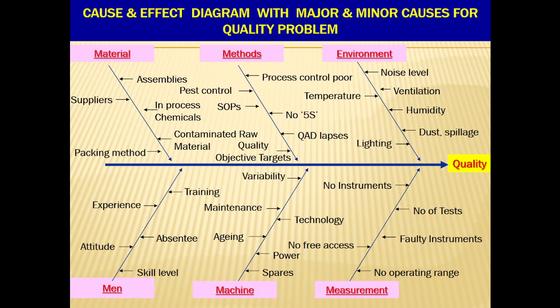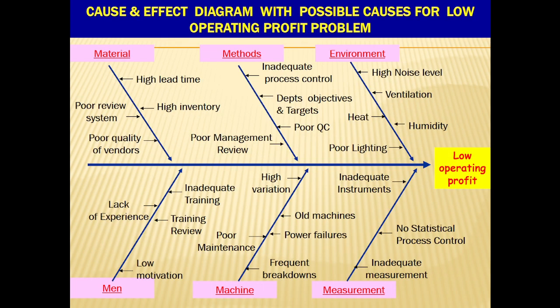This is an example of a filled-in fishbone diagram with possible major and minor causes addressing quality problems. Go through the slide and understand how it is filled in with the relevant information. Similarly, you need to fill in the possible major and minor causes against each category. Do brainstorming with your team to find out the most relevant major cause for the problem. Then start doing YY analysis to arrive at the root cause so that it can be eliminated by taking corrective actions. Another filled-in fishbone diagram is also shown with possible major and minor causes for a low operating profit problem.